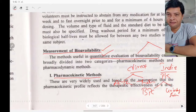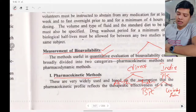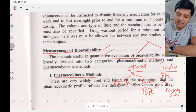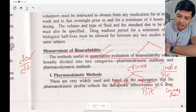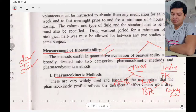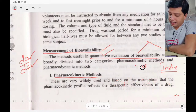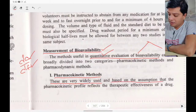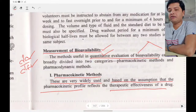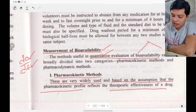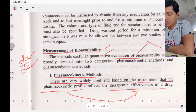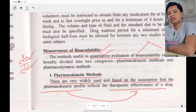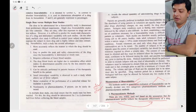This may be asked in GPAT — which is the direct and which is the indirect method. The pharmacokinetic method looks at the change in concentration DC/DT — change in drug concentration in plasma over time. These methods are widely used and are based on the assumption that the pharmacokinetic profile reflects the therapeutic effectiveness of the drug.